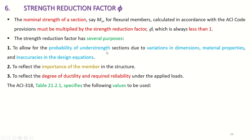The phi factor has several purposes. Number one: to allow for the probability of understrength sections due to variations in dimensions — the executed dimension may differ from the designed one — material properties — concrete strength may not achieve what was specified — and inaccuracies in design equations, since they are based on probability and not exact. Second: to reflect the importance of the member. For example, a column is more important than a beam, which is more important than a slab. Third: to reflect the degree of ductility and required reliability under applied loads.